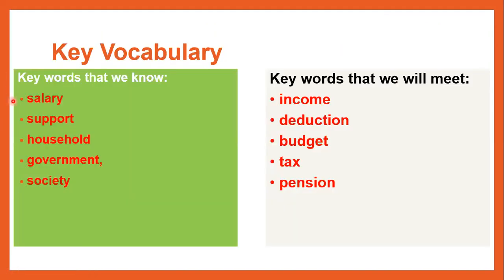The vocabulary that we already know includes the word salary — the money taken home by someone who works, paid monthly or sometimes weekly — as well as support, household, government, and society. The new words we're going to meet today are: income, meaning money that comes in; deduction, money that's taken out; budget; tax; and pension.